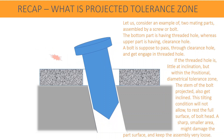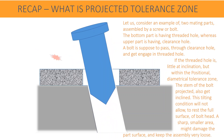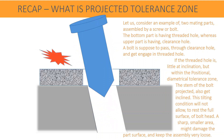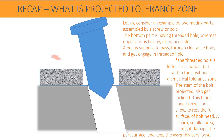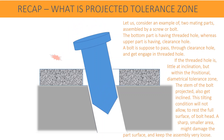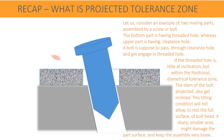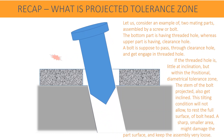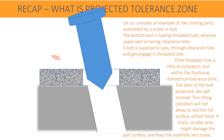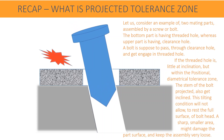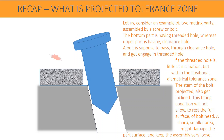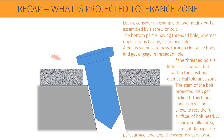If the threaded hole is slightly at an inclination but within the positional diametrical tolerance zone, the stem of the bolt projected also gets inclined. This tilting condition will not allow the full surface of the bolt head to rest properly. A smaller contact area might damage the part surface and keep the assembly very loose.